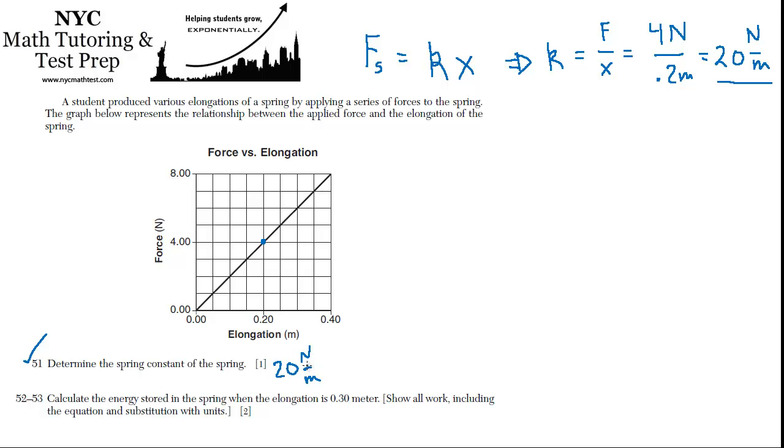So just remember that's the units of a spring constant, it's newtons per meter. And if I picked some other point on here, suppose I had picked 8, then it would be divided by 0.4 and it would still be 20 newtons per meter. So that's why it's important that this relationship be a straight line.